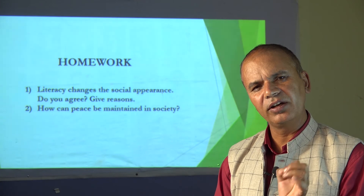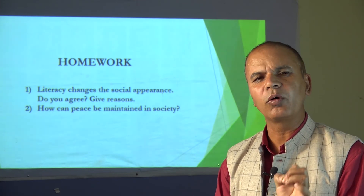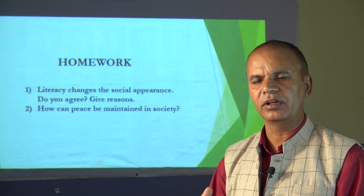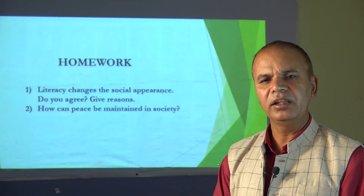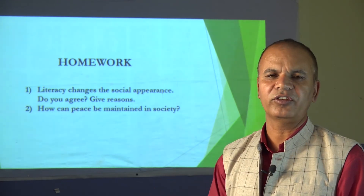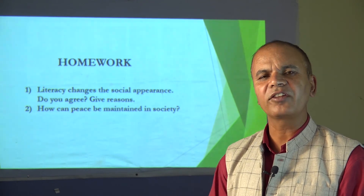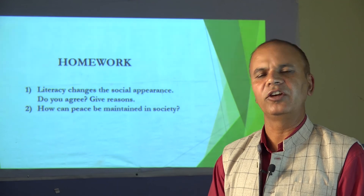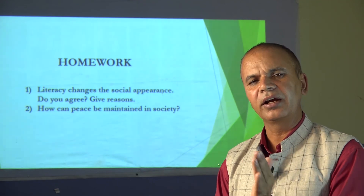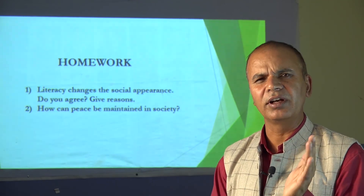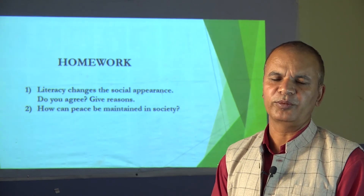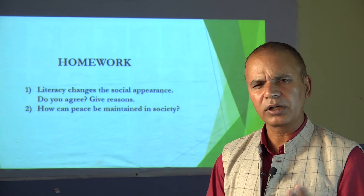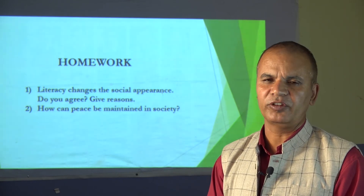We learned about literacy: simply, it is the skill of reading, writing, and arithmetic calculation. In the 21st century, seven components are necessary for making anybody literate — reading, writing, arithmetic calculation, relation, recreation, rights and duties. Only then can one be considered a fully literate person.